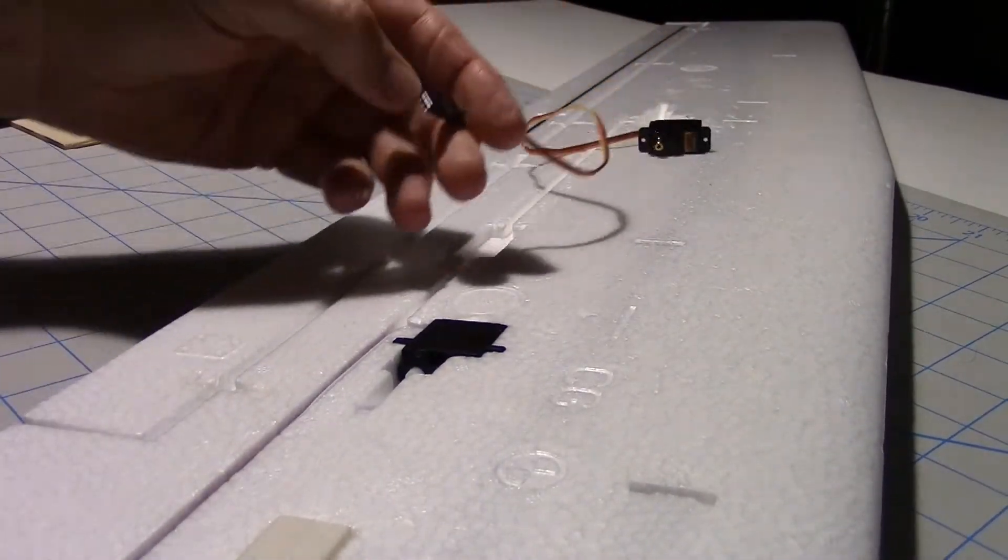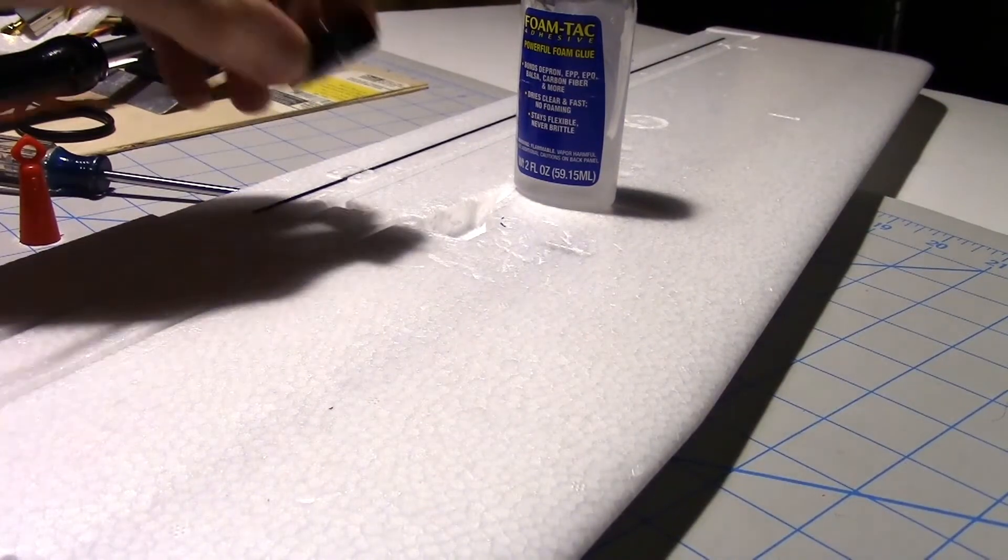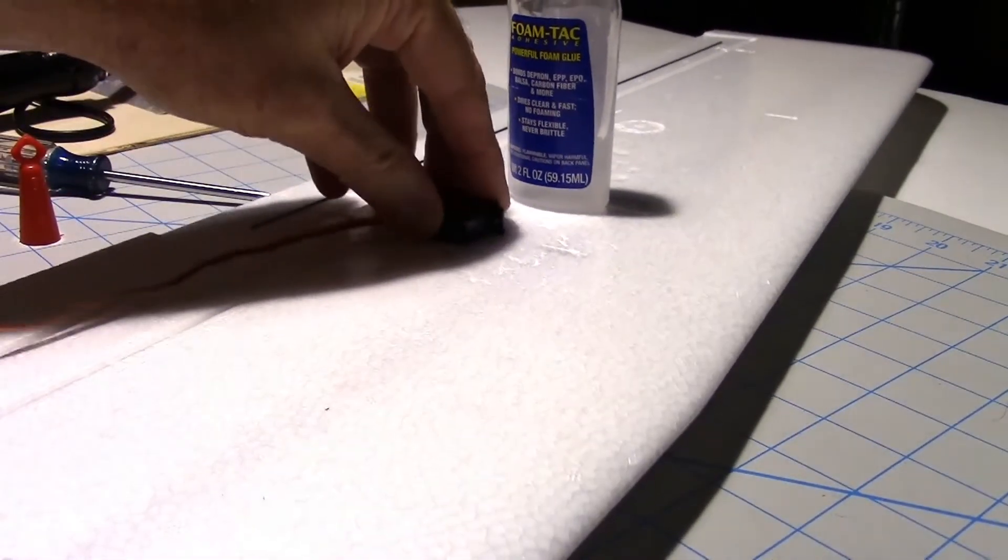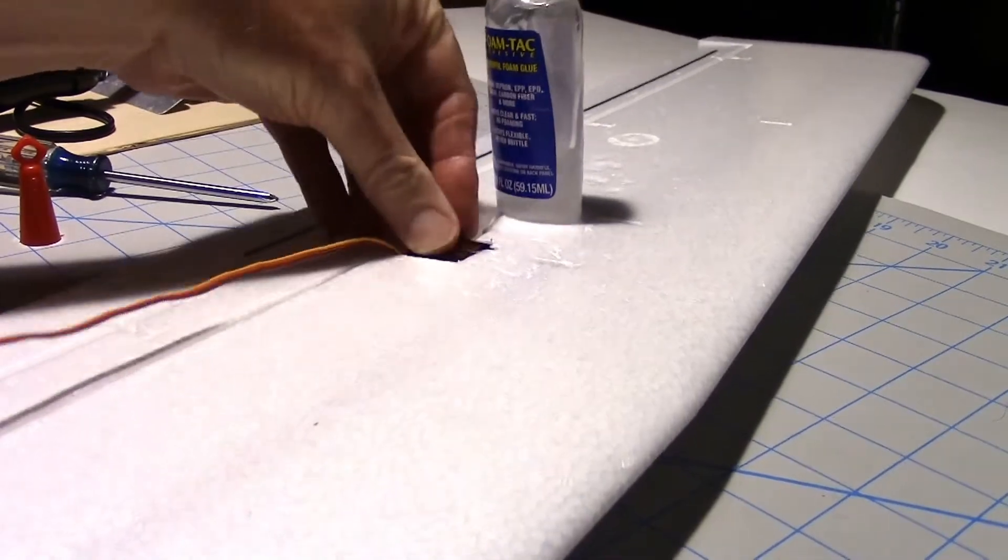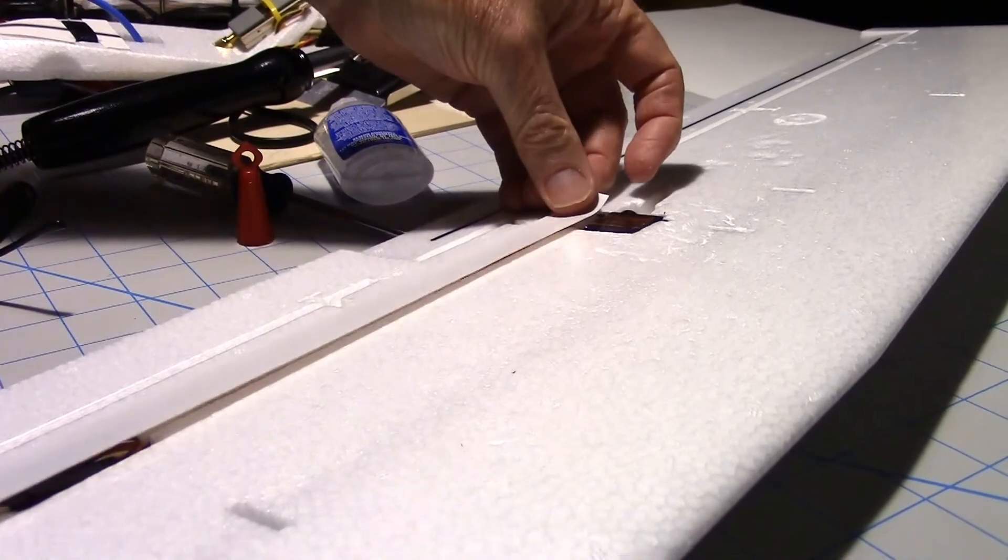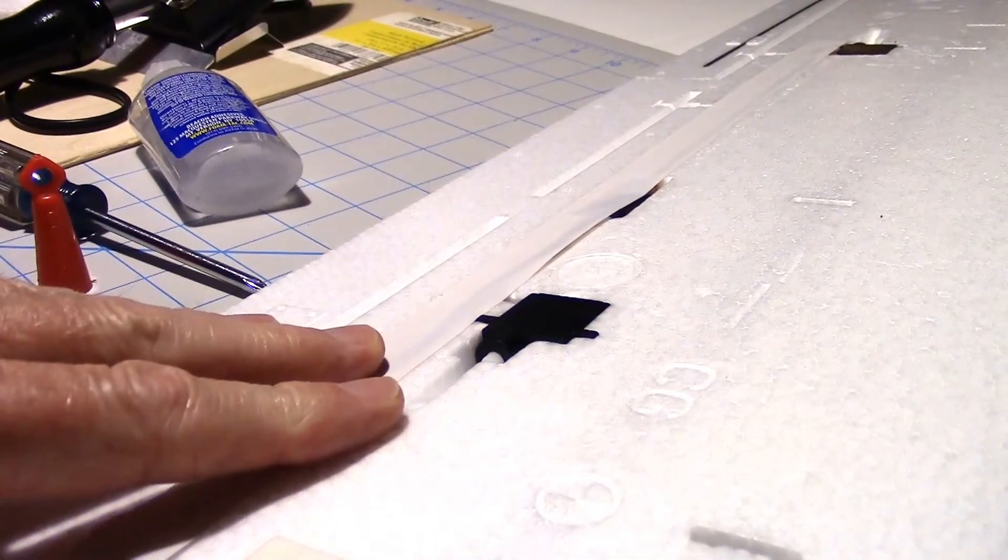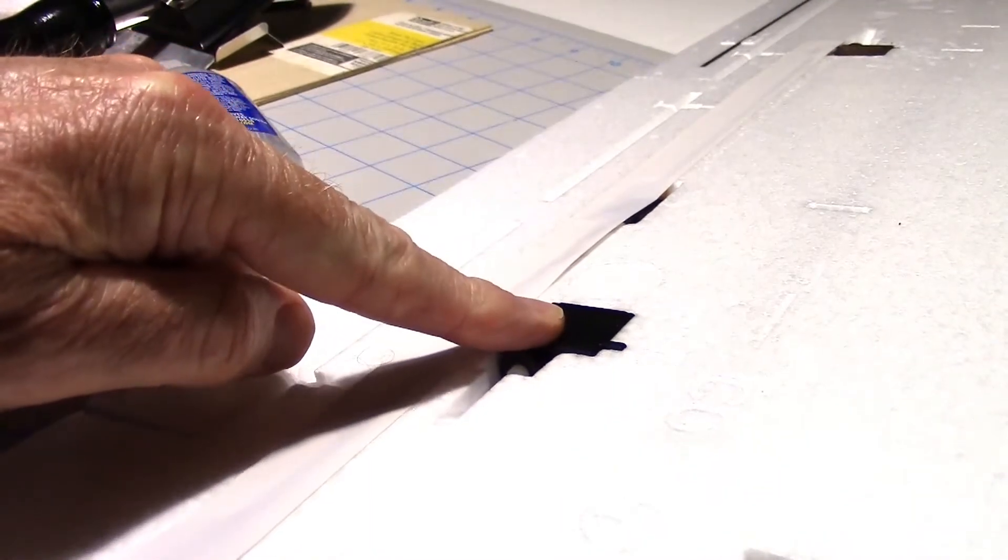I'll glue it in with a little bit of foam tack. Got the foam tack on and now I'm just going to glue the servo in place. Putting the piece of vinyl tape back on there.